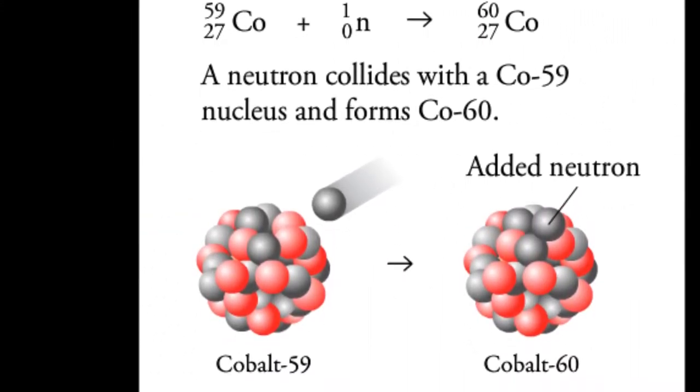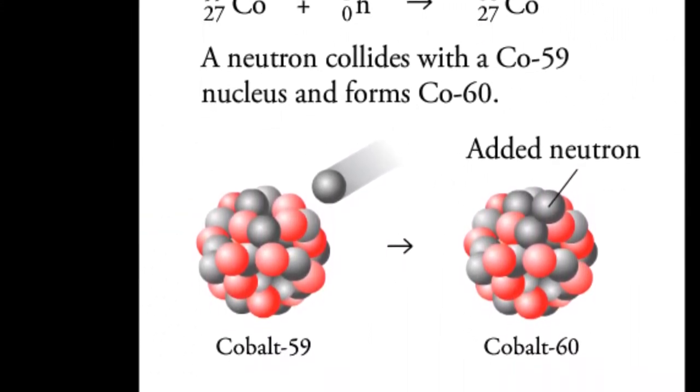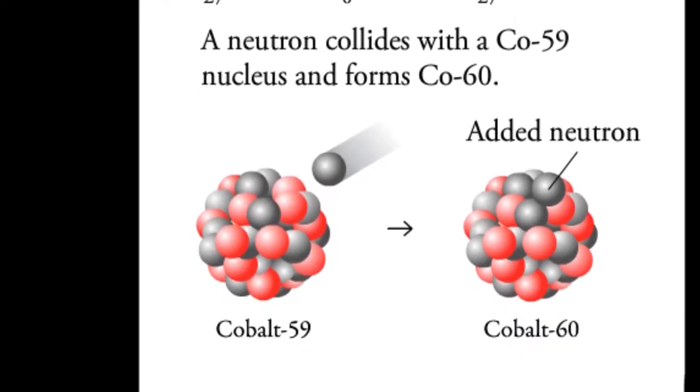Cobalt-60 is a beta-emitting radioactive isotope with a half-life of 5.27 years. It is not a naturally occurring isotope. A neutron collides with a cobalt-59 nucleus and forms cobalt-60.